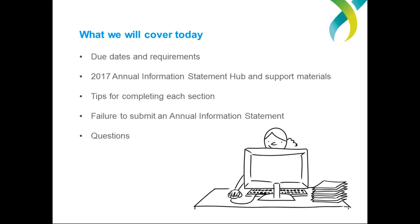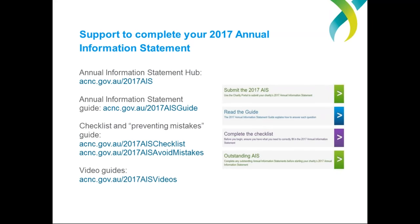That highlights the support and resources available to charities completing their AIS. First up is the AIS hub, the place to go which links charities with the annual information statement form and the guidance needed to complete their 2017 statement. The hub links to our redesigned 2017 AIS guide. Our AIS checklist and avoiding mistakes document contains important reference materials and tips on avoiding common mistakes. There are also a dozen short how-to videos scattered throughout the AIS guide, and we've made big improvements to help text throughout the form. Clicking the purple help buttons will provide further advice and direct links to relevant spots in the guide or the ACNC website.